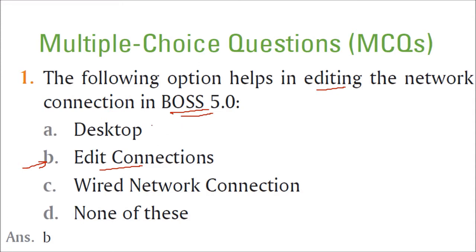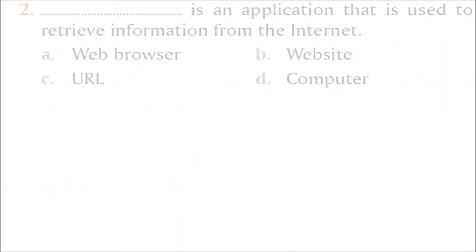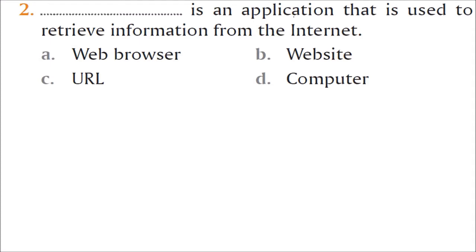Apache and others are names of web servers. Next: an application that is used to retrieve information from the internet. We are talking about Internet and World Wide Web. We have an application called web browser. URL is the string which you put inside the web browser to get the pages.